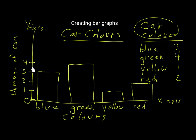When putting numbers along the y-axis, if your biggest number is very large, the steps between the numbers will be larger — maybe steps of 5, 10, 20, 50, or 100. But if you have a small number, like in this case, you can go up in steps of one, two, or even three.